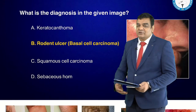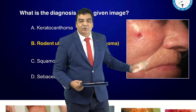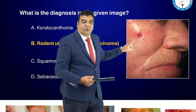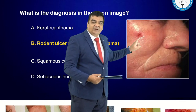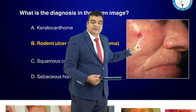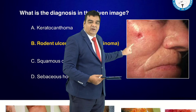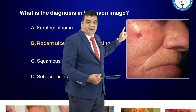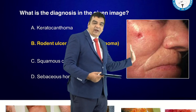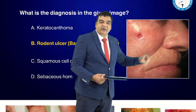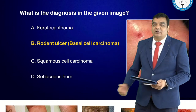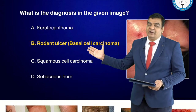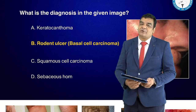What is the diagnosis in the given image? They gave a picture showing a malignancy in a particular area of the face. Malignancies above a certain line are generally basal cell carcinomas, also known as rodent ulcer. Again, this was a straightforward single-liner question.